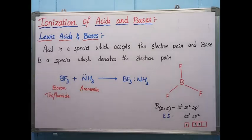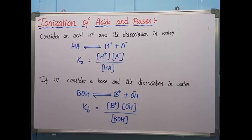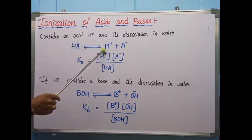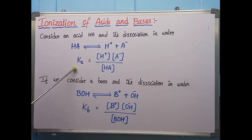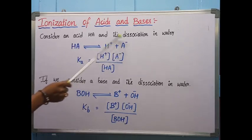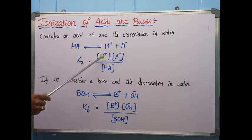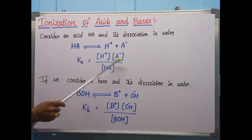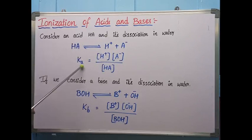They combine together forming the new structure BF3·NH3. Now, if we consider an acid — for example HA — when added to water it breaks into H+ and A−. The dissociation constant or equilibrium constant Ka equals the products concentration divided by the reactants concentration: Ka = [H+][A−] / [HA]. Here Ka indicates the acid dissociation constant.